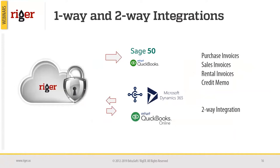Integrations can be done in two ways. One-way integration means we send information from the primary system to the secondary system. For example, with RIGOR and CH50 or QuickBooks, we send invoices from RIGOR and all the information goes to QuickBooks — and we receive nothing back.